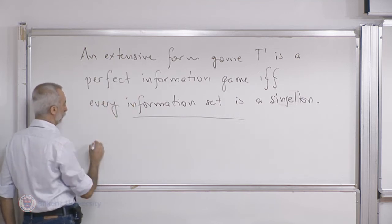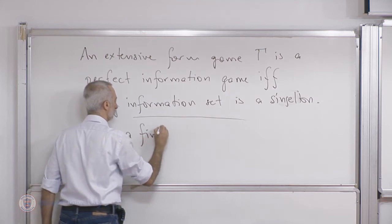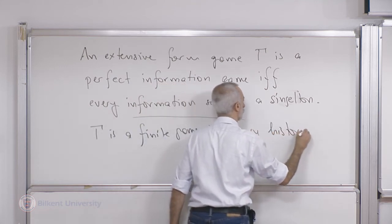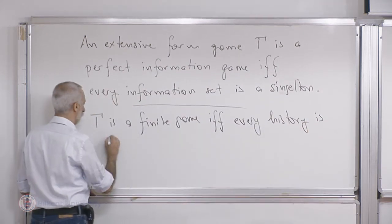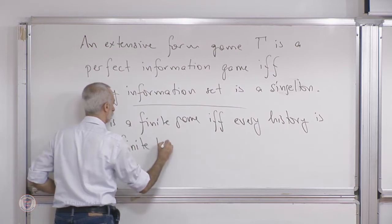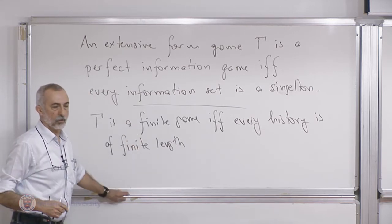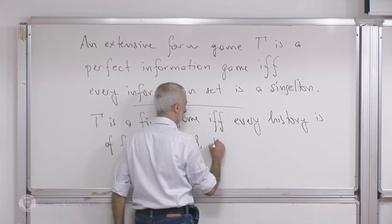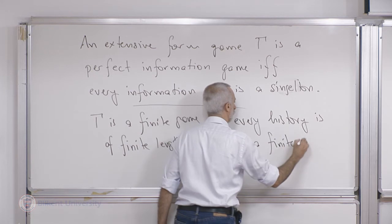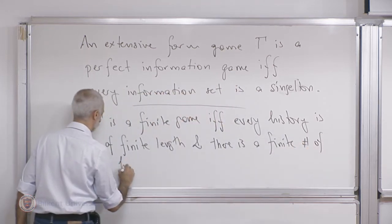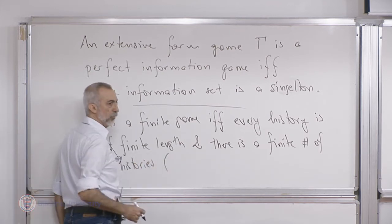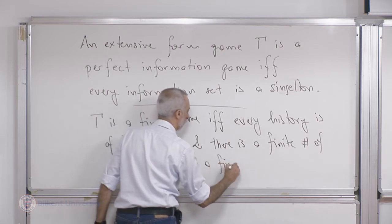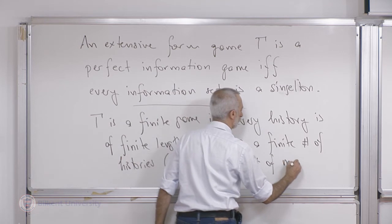An extensive form game gamma is a finite game if and only if every history is of finite length — remember, a history was a sequence of actions — and there is a finite number of histories. In summary, this means that when you draw the game tree, there is a finite number of nodes. That's what it means for the game to be finite.